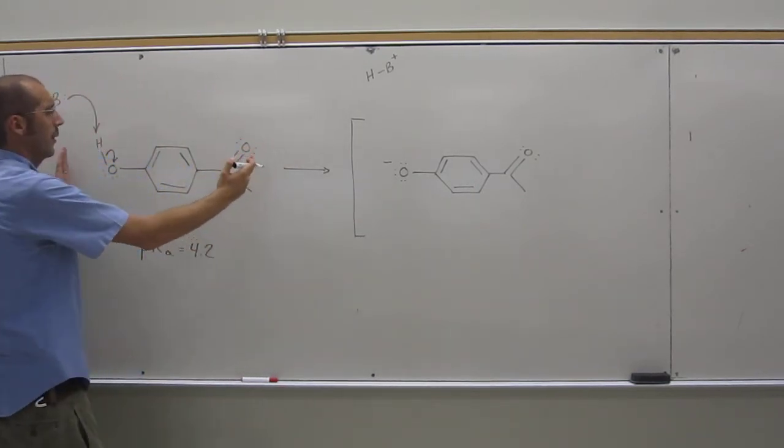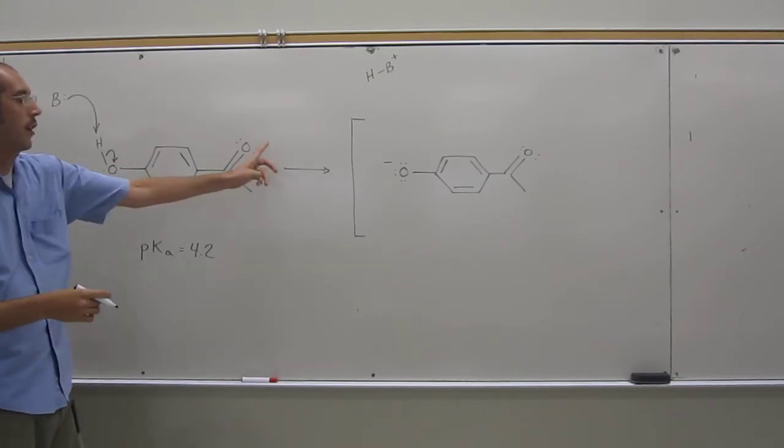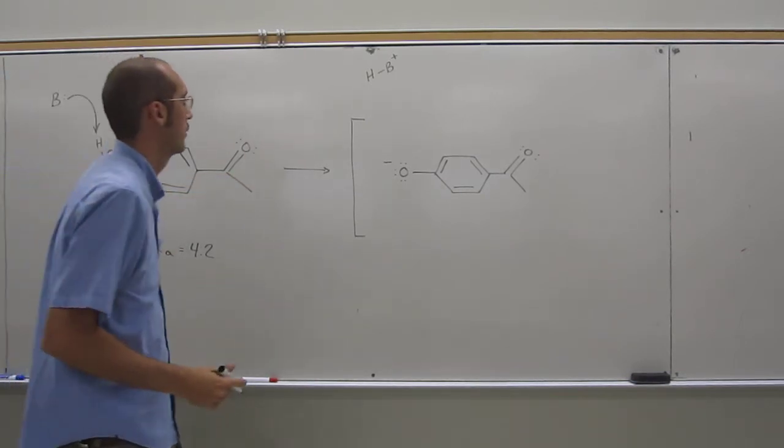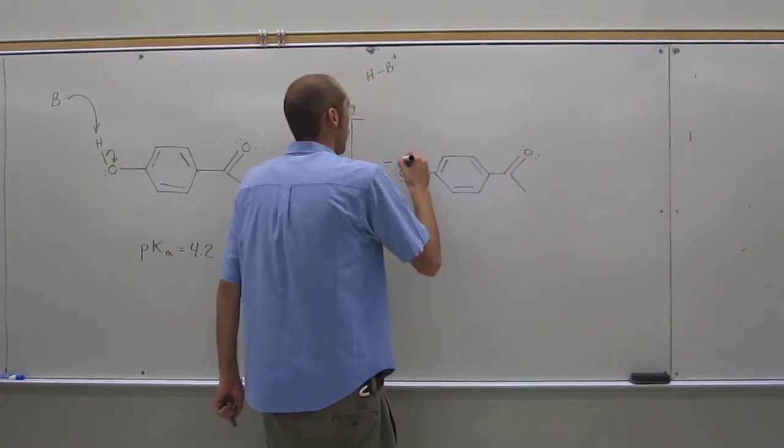Notice, if we tried to do a resonance form with this, we would get a charge separation. We'd get a positive charge here, a negative charge there, or whatever. Here we've already got the negative charge, so we can distribute it.